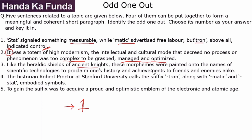Sentence three reads: 'Like the heraldic shields of ancient knights, these morphemes were painted onto the names of scientific technology to proclaim one's history, achievements, and to friends and enemies alike.' So these were like a show of symbols, but again we do not know which symbols are being talked about — we will come back to it.